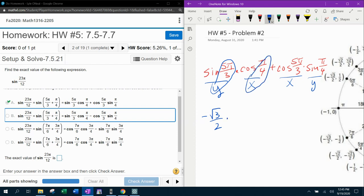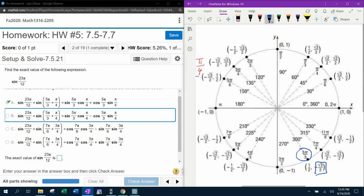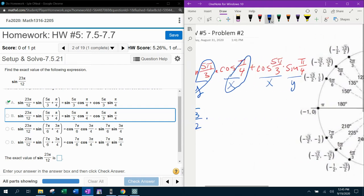And then I need the x coordinate at π over 4. X coordinate square root of 2 over 2.